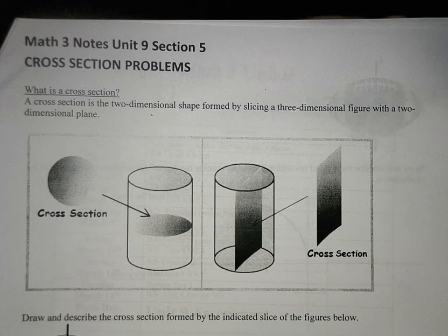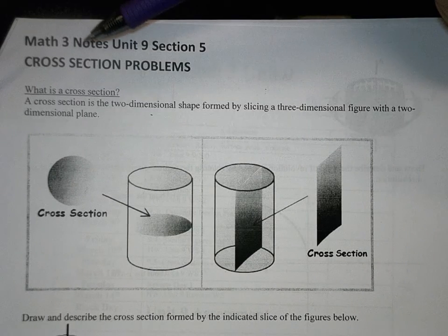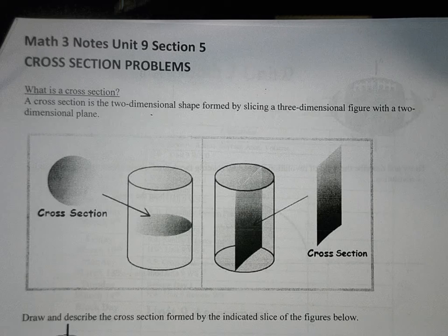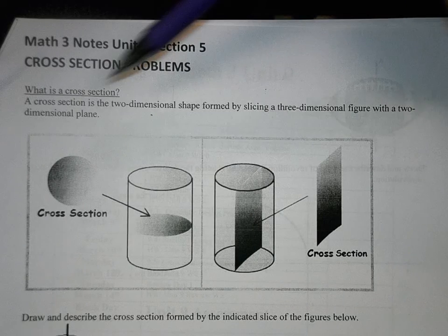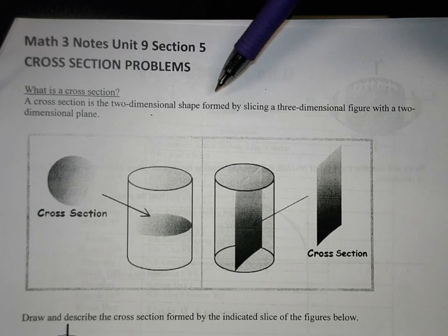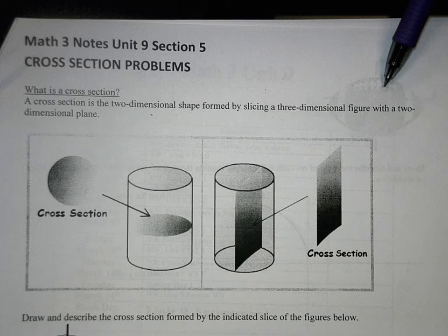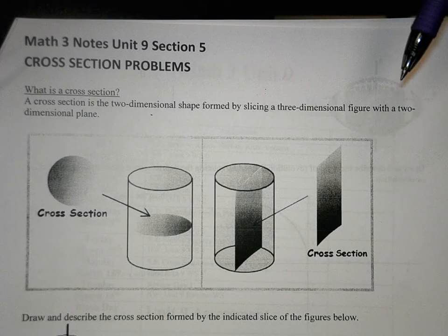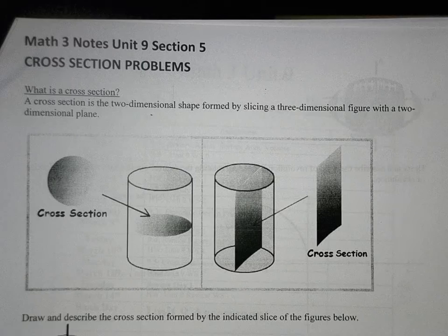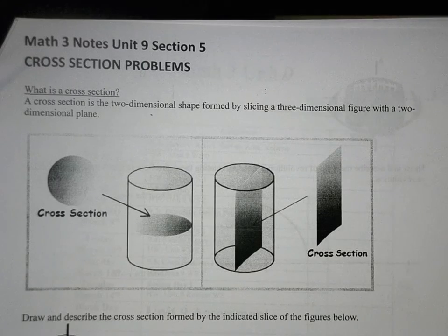Math 3 Unit 9 Section 5. Today we're talking about cross-section problems. What is a cross-section? It's basically taking a two-dimensional shape from slicing a three-dimensional figure. We watched some videos on this today. If you have your resource page, you can always go back and watch some of those exciting videos again.